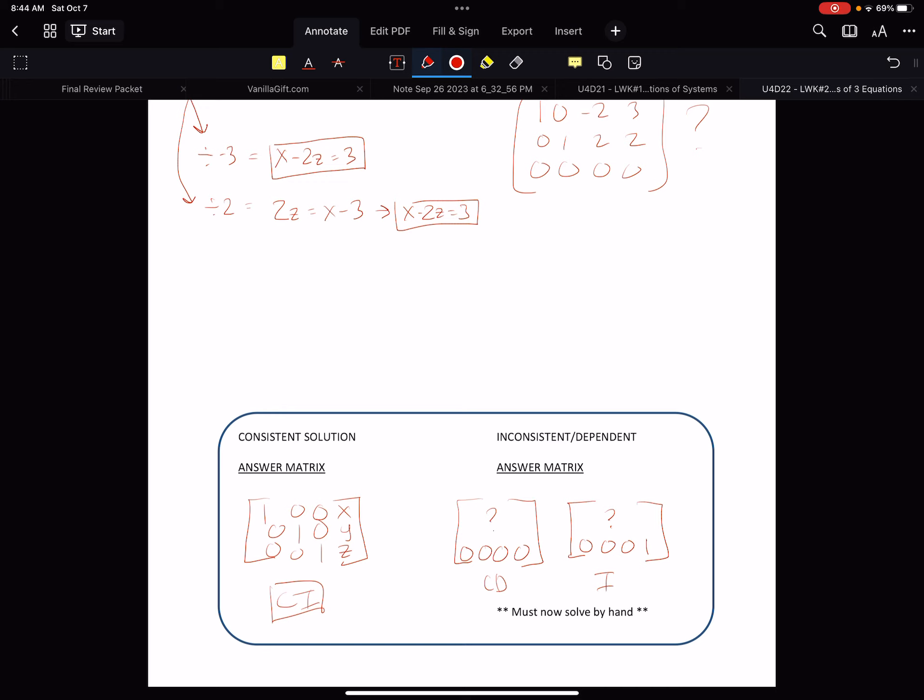Now even if we had a 2 variable system, a 3 by 2 matrix, we would have 1, 1, 0, 0, x, y. So you're always going to get that diagonal row of 1s. If we had a 4 by 5, we would have even more diagonal ones. But that's what we're looking at here.